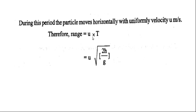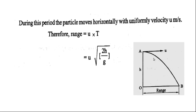From h = ½gt², the time of flight t = √(2h/g). The horizontal range R is equal to u × t, since the particle moves horizontally with uniform velocity u during this period. So horizontal range R = u × √(2h/g), as distance equals velocity multiplied by time.